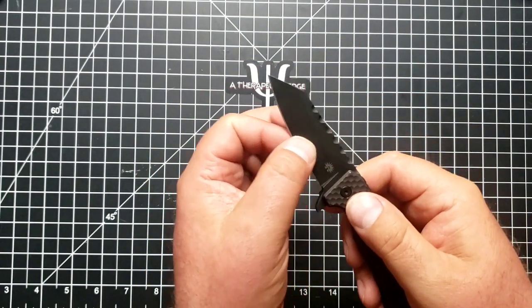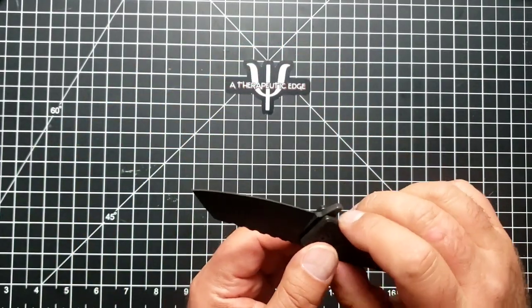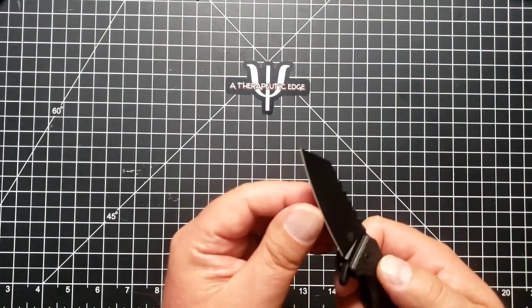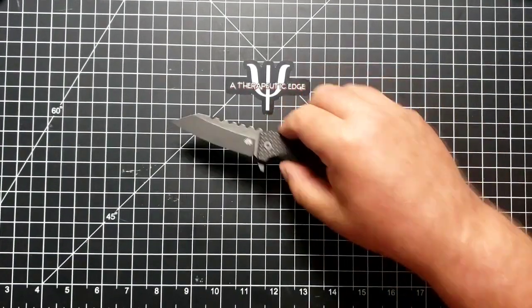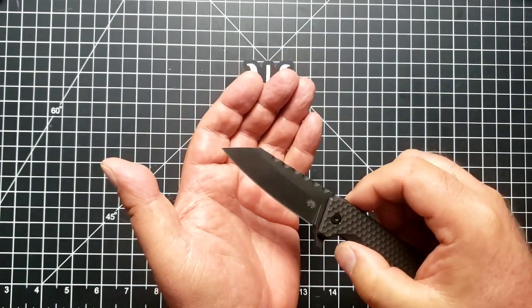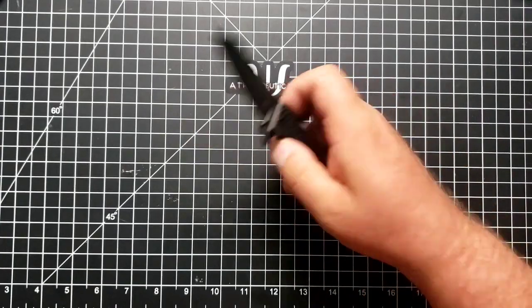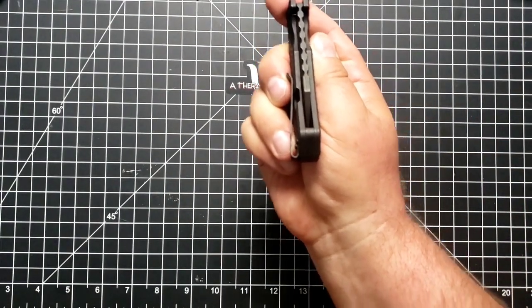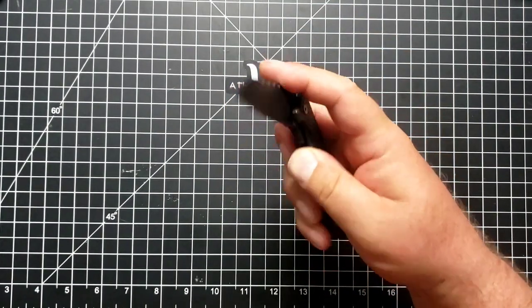Now, this nice sort of shallow belly on this reversed tanto that follows all the way to the tip means that this thing is one heck of a cutter, and it comes to a very nice edge. This thing is hair-popping sharp. It was when it came out of the box. The grind on either side of the blade is just perfect. But of course, that is what Wii brings to the table. Centering is dead on.